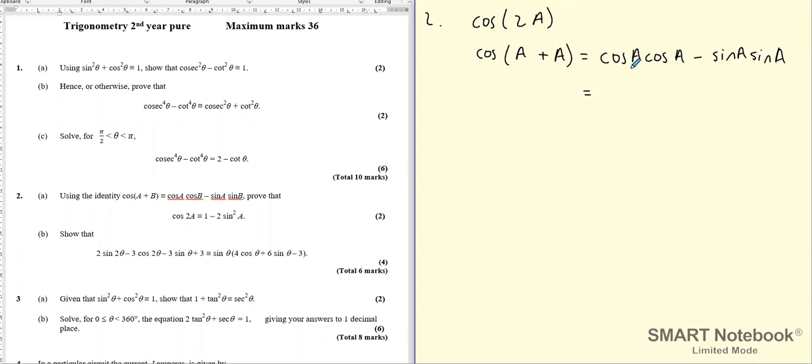So this then becomes cosA cosA minus sinA sinA. And so if I now simplify this, cosA times cosA is going to be cos²A. sinA sinA is going to become sin²A.